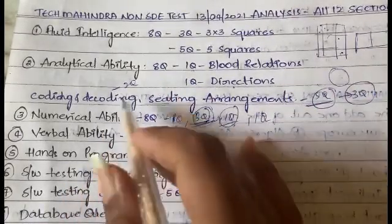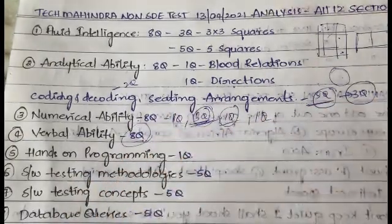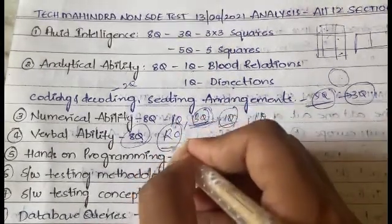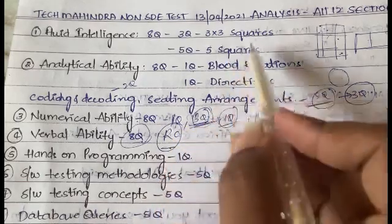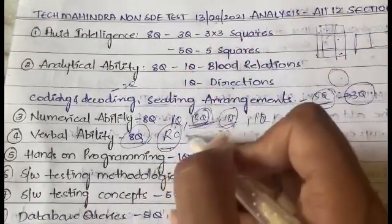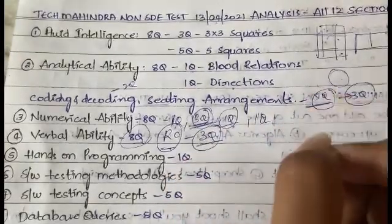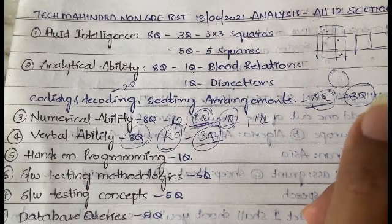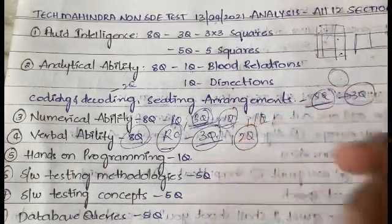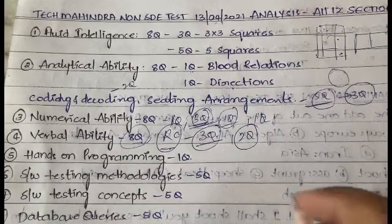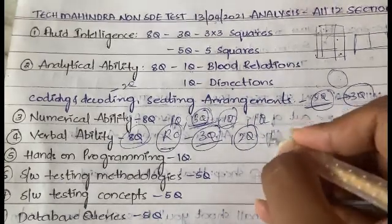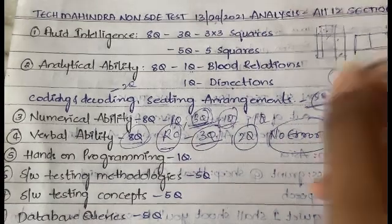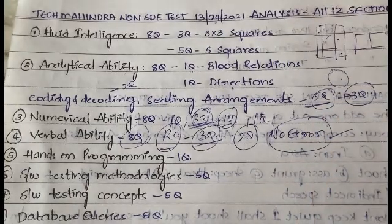After Numerical Ability we have Verbal Ability, which is essentially all English. The very important topic is reading comprehension because it takes a lot of time. In the 13th April exam, exactly three questions were asked from reading comprehension. Two questions were sentence error type — they give you a sentence and you identify which part has an error, with an option for 'no error' if the entire sentence is correct.